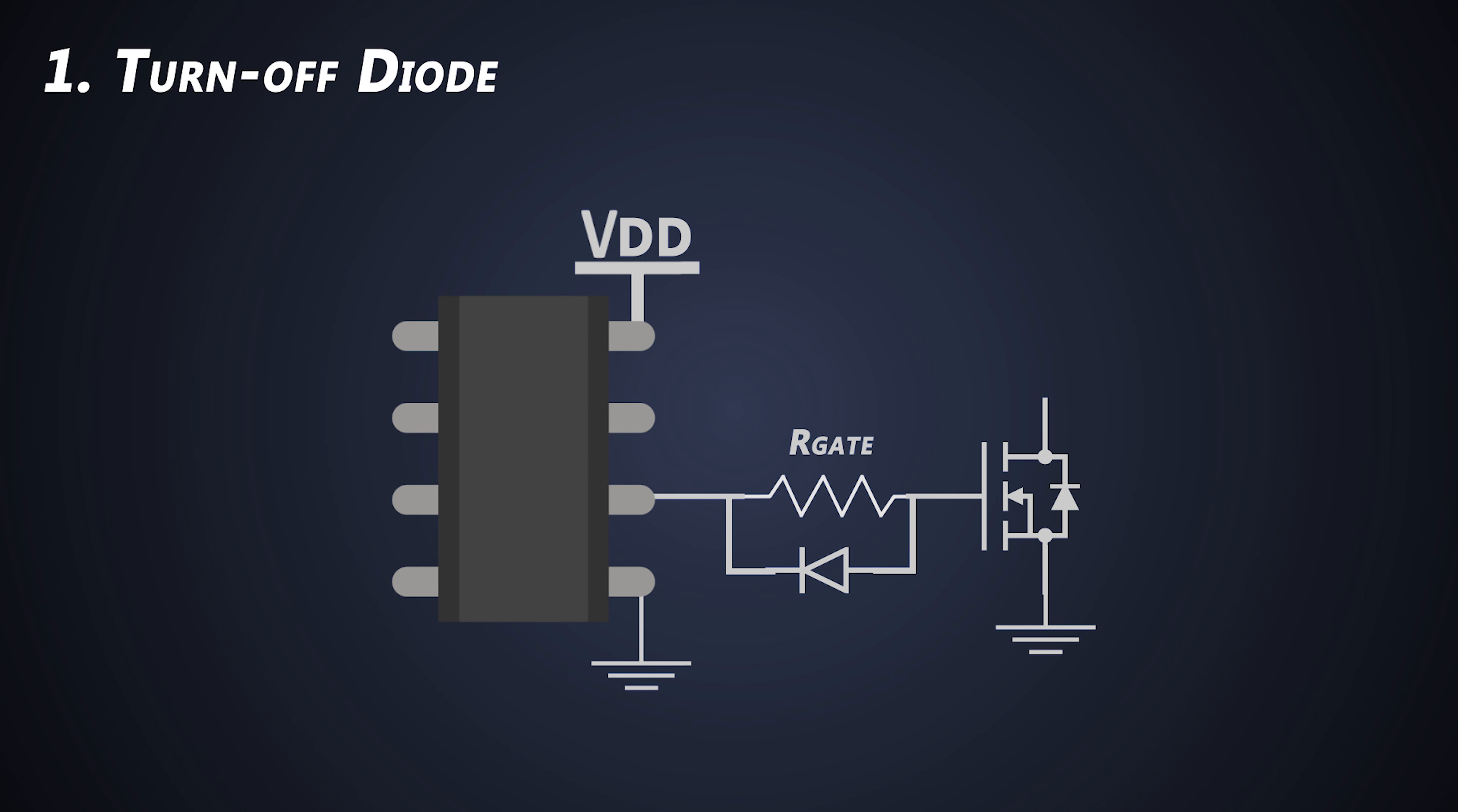The easiest way to increase the turn off speed is by using a turn off diode. In this circuit, the gate resistor allows adjustment of the MOSFET turn on speed. During turn off, the anti-parallel diode bypasses the resistor. We'll name it as DOF. This DOF works only when the gate current is higher than this formula, which is the VDOF upon the gate resistance.